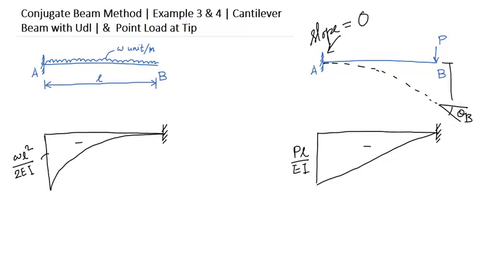And the deflection here, delta B, is the maximum deflection. Here the deflection is also zero. Now calculate the slope. The slope at B is nothing but the shear force at B.